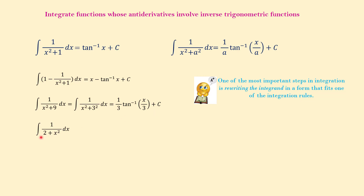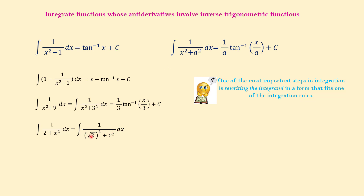Another example: the integral of 1 over (2 + x²) dx. Note that the order is changed — instead of x² plus a number, we have a number plus x². We rewrite 2 as (√2)², so the integrand becomes 1 over ((√2)² + x²), which fits the formula with a = √2. The answer is 1/√2 · arctan(x/√2) plus c.